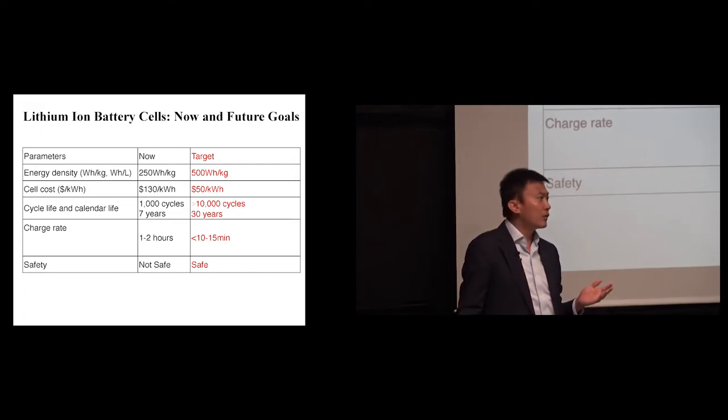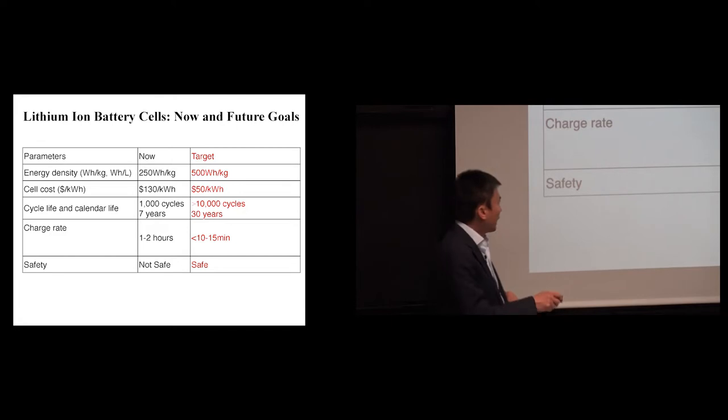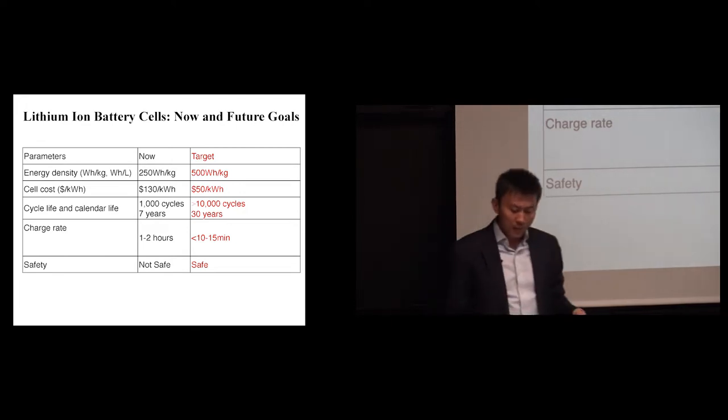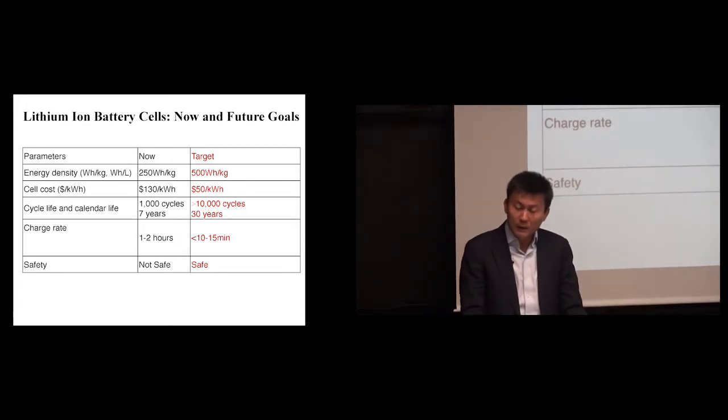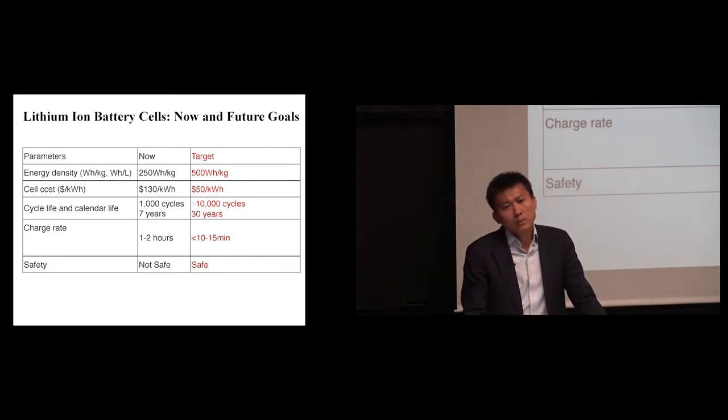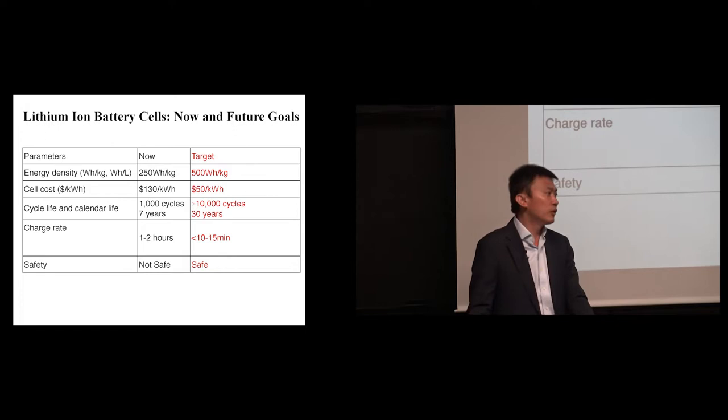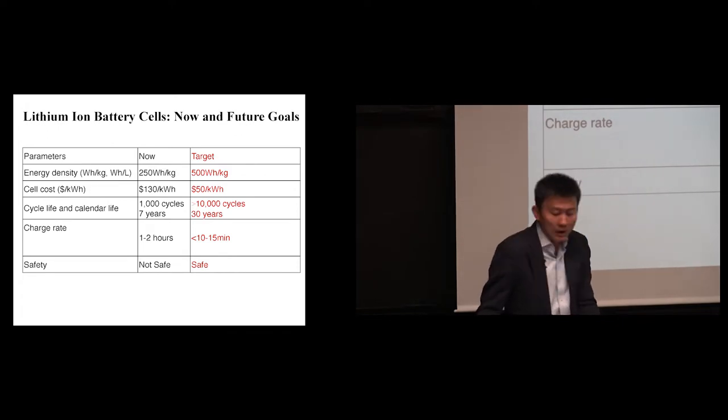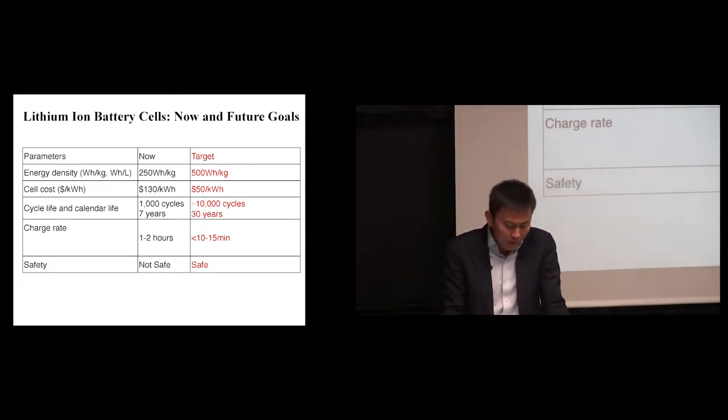The cell cost needs to go down by a lot. Then you need to develop new chemistry in there. Materials need to be low cost, abundant. And cycle life, about 1,000 cycles in seven years. Can you go to 10,000, 11,000 cycles range? 30 years. So you can really, going from car to car, retire, take the battery pack, and use it for the electric grid.